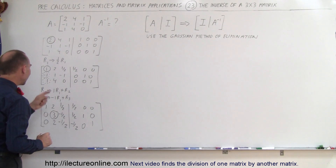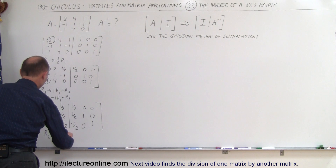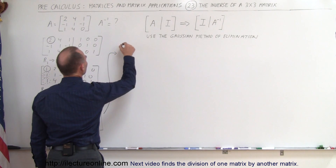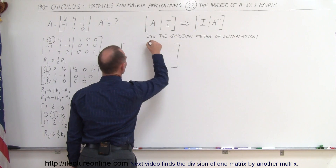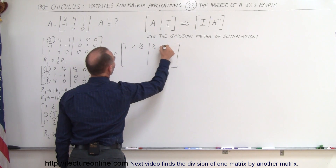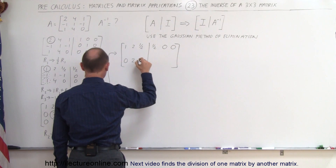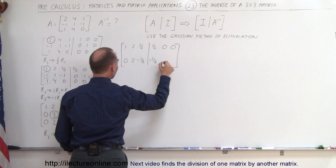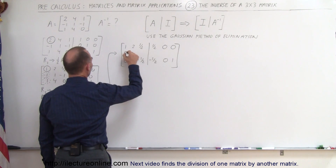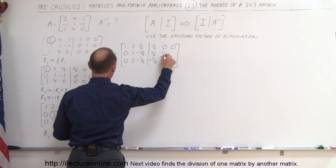Now I take the 3 in row 2 and want to turn it into a 1. To do that, I take the second row and replace it by one third of the second row. The first row does not change: 1, 2, one half, one half, 0, 0. The third row doesn't change: 0, 2, negative one half, negative one half, 0, 1. The second row becomes: 0, 1, negative one sixth, one sixth, one third, 0.